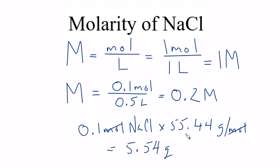So now instead of moles, you have the grams. You put some water in your volumetric flask, add the 5.54 grams, dissolve it, and fill up to the mark in your flask, and you'll have a 0.2 molar solution. When looking at the molarity of NaCl, we need to know how many moles and how many liters we're working with to figure out the molarity.